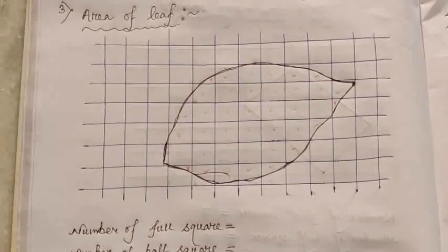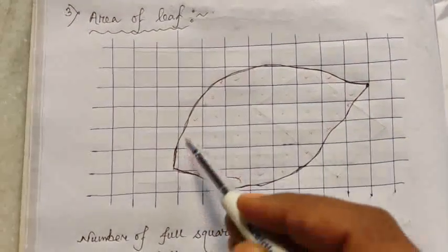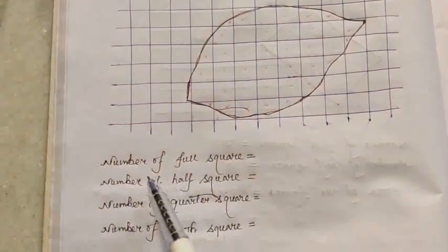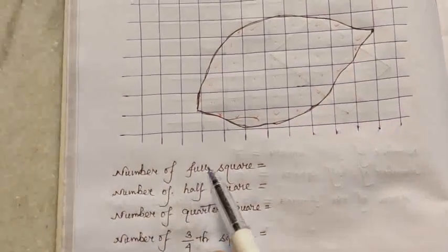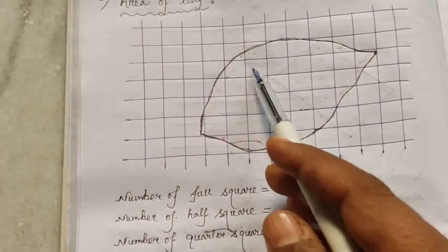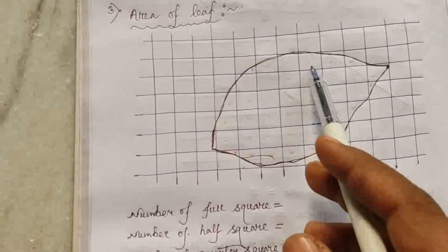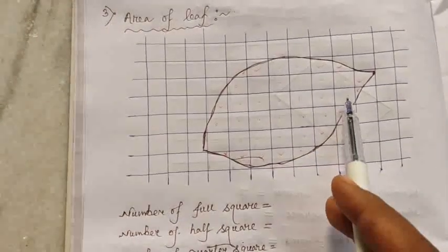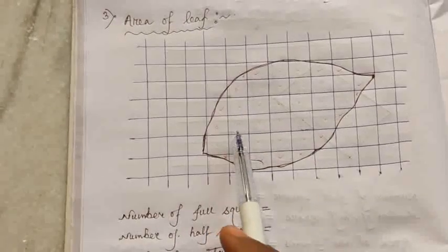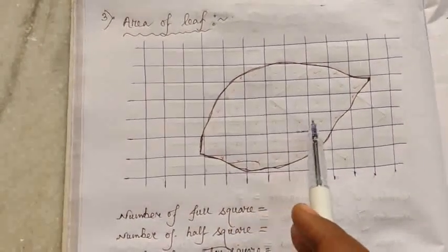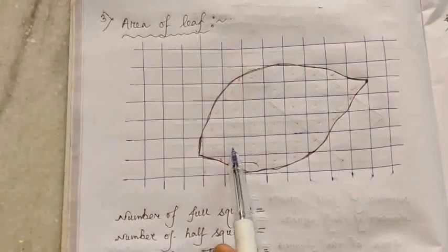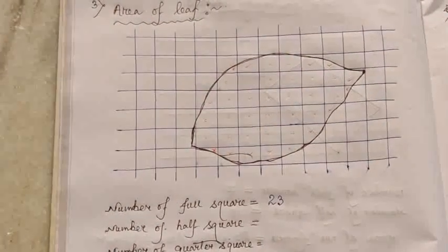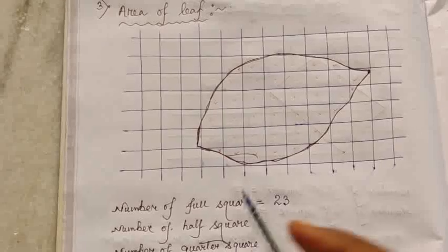Now we have to find out the area of this leaf. First, the number of full squares — I have put a dot on each full square. Counting: one, two, three... the number of full squares is twenty-three.